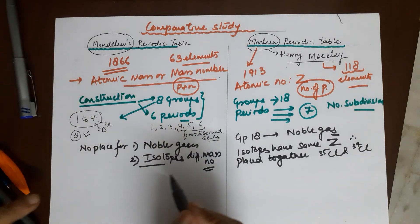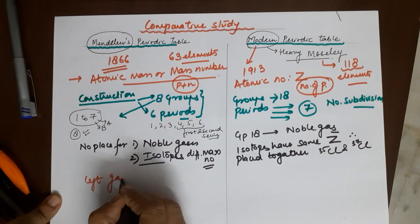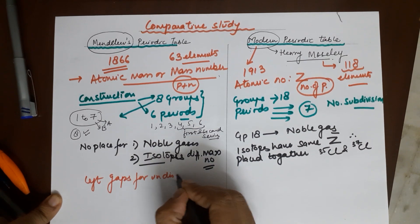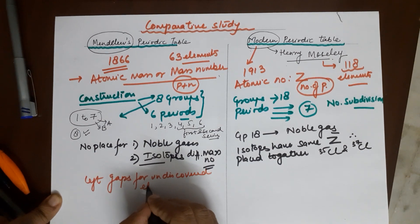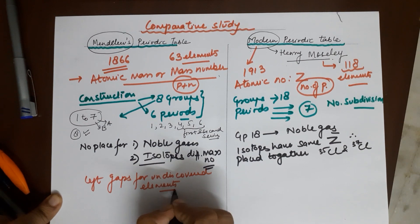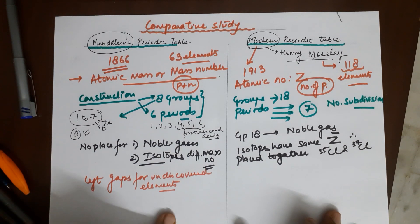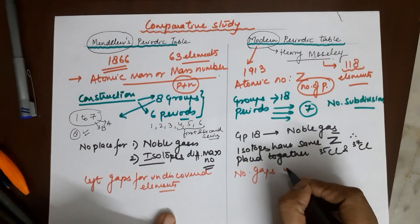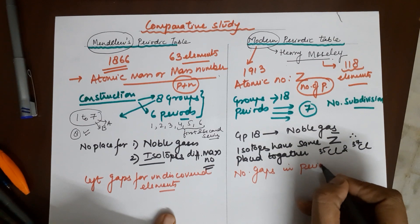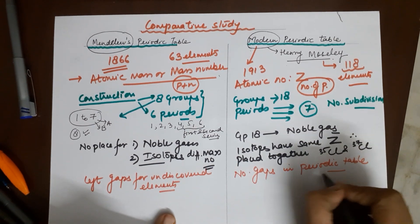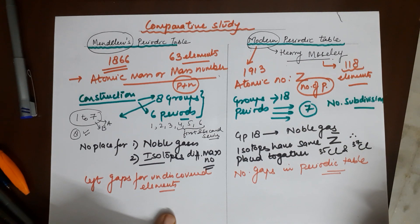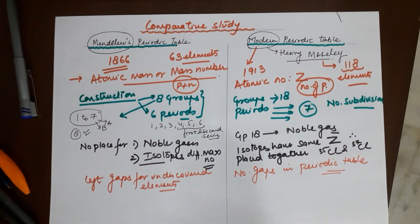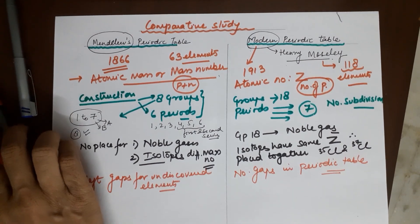Mendeleev left gaps in his periodic table for undiscovered elements, which was an advantage. In contrast, there are no gaps in the modern periodic table.